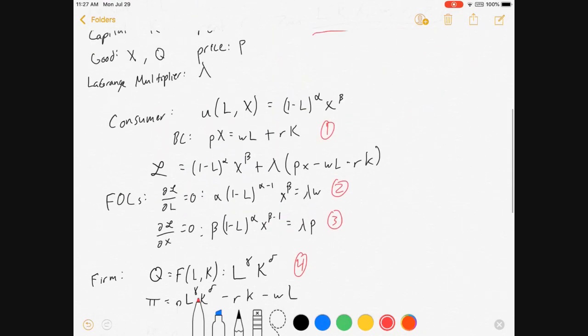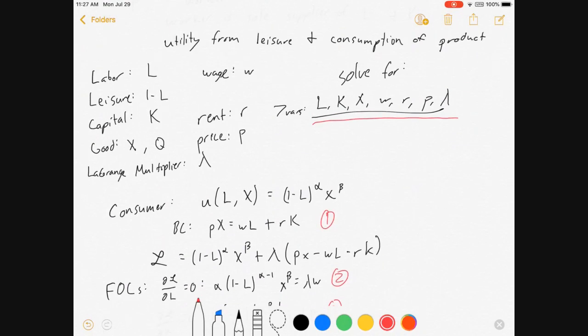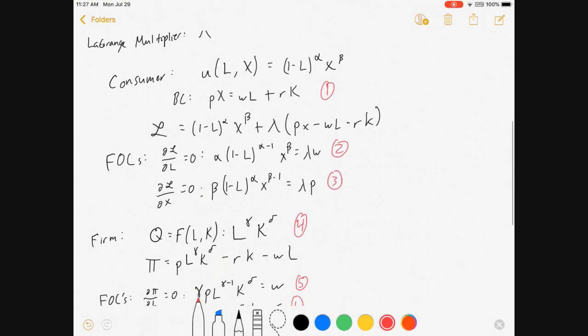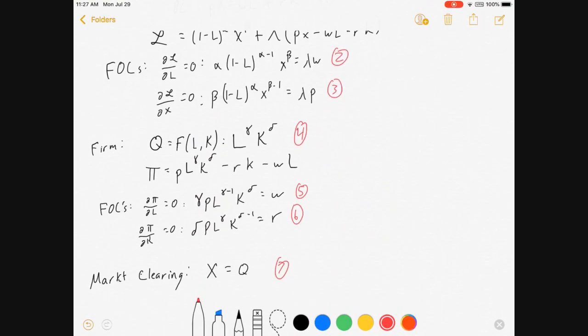So there we have it. Seven equations, seven unknowns. Thanks for watching part one. In part two, I'm going to show how to solve for L, K, and X as functions of prices. And then in part three, I'll show how to solve for prices as functions of parameters, such as alpha, beta, delta, gamma. Thanks for watching, guys. Good luck out there. Happy econ-ing.